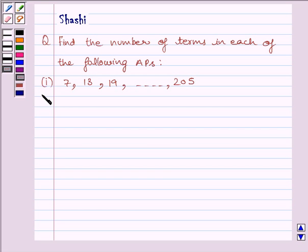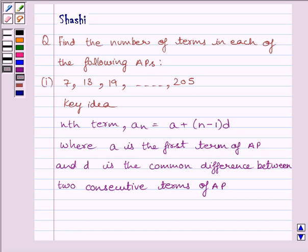The first arithmetic progression given to us is 7, 13, 19, till 205. First of all, let us understand that the nth term an is given by a plus (n minus 1) multiplied by d, where a is the first term of AP and d is the common difference between two consecutive terms of AP.